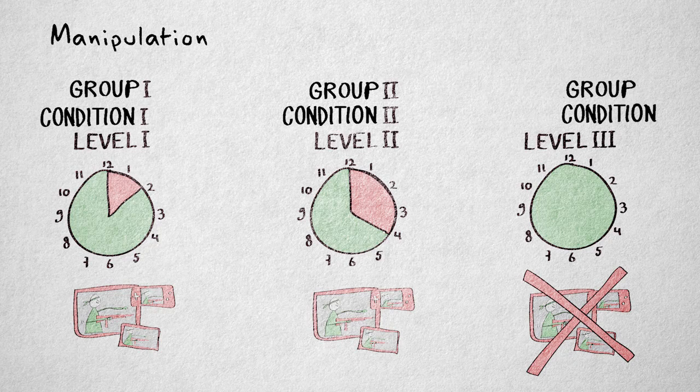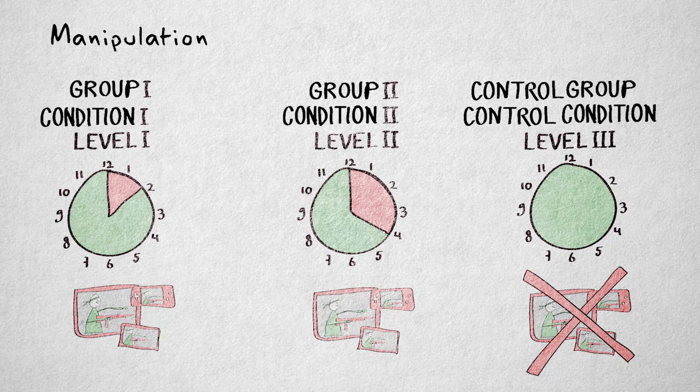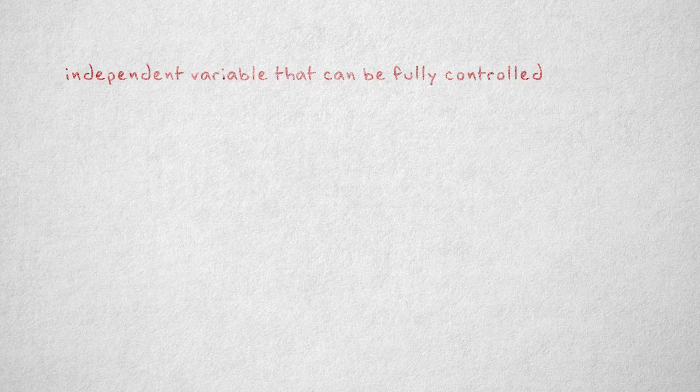If the independent variable is absent, this level is called the control condition, or control group. In our example, this is the group that does not play the violent video game. If the independent variable is fully controlled by the researcher, it's often referred to as an experimental variable.